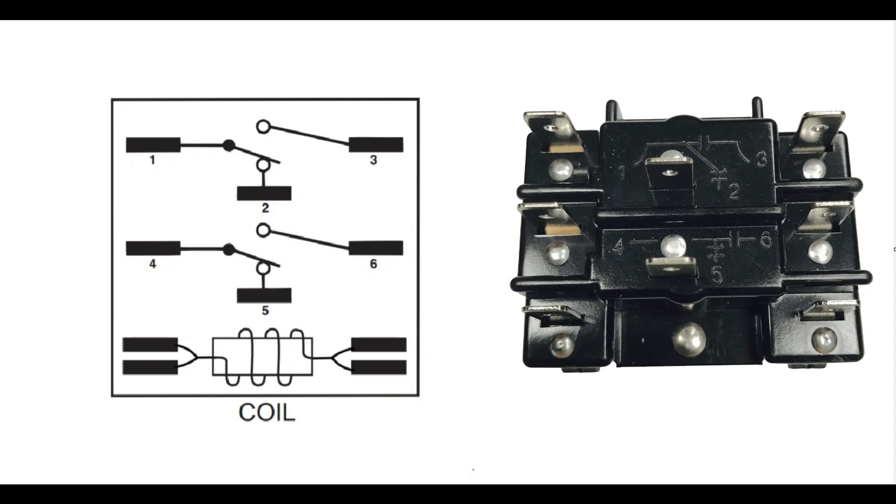So basically how this works is you have what's called normally open and normally closed contacts. Now you can see in this image here, we are in a normally closed position. So this is the position that the relays, the switches inside the relays are in when it comes out of the box. You don't have to add power to it. You don't have to do anything. The springs inside there hold these switches in these positions.